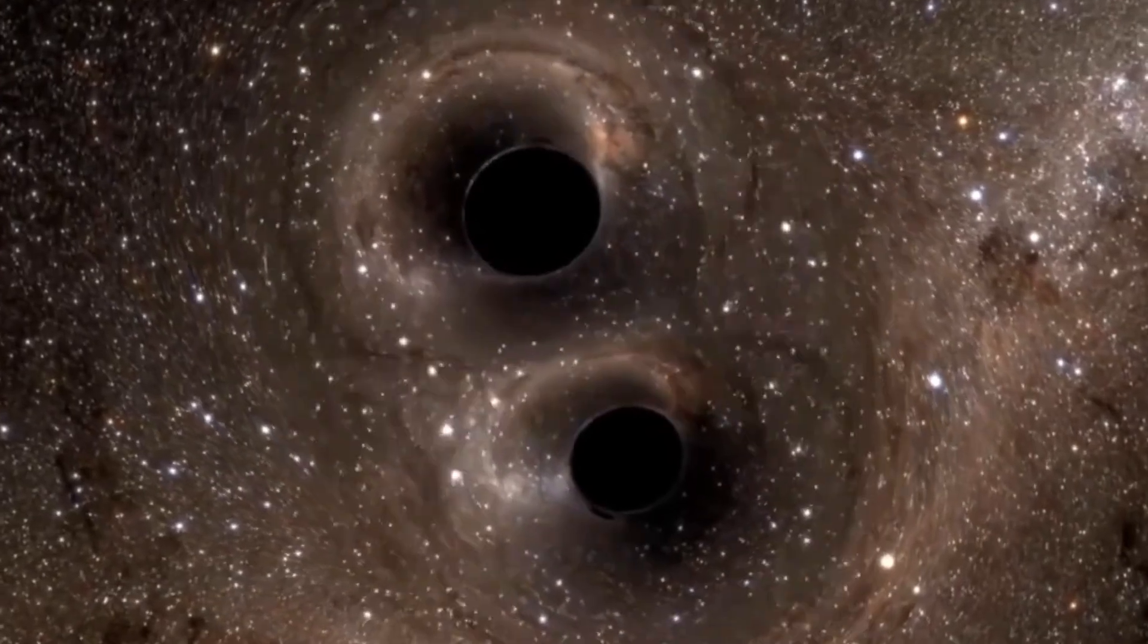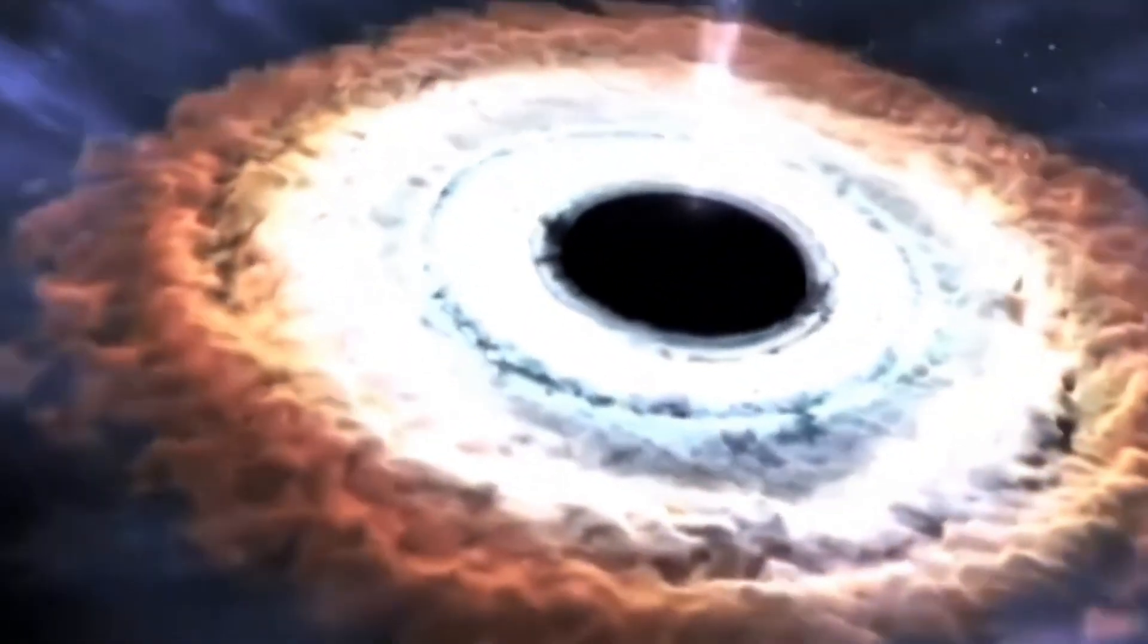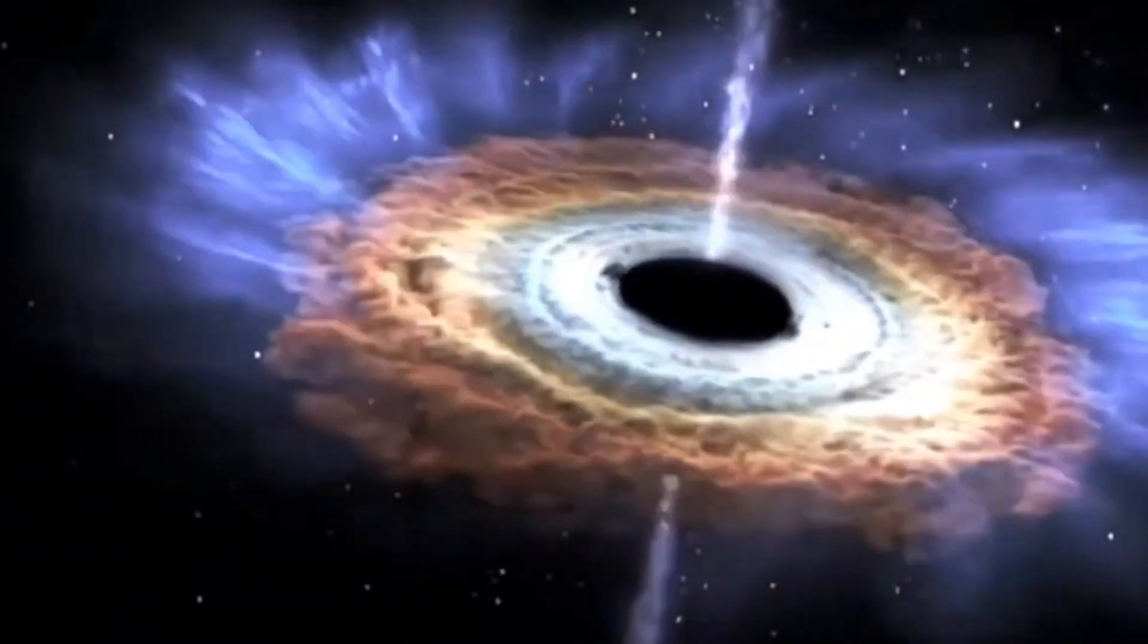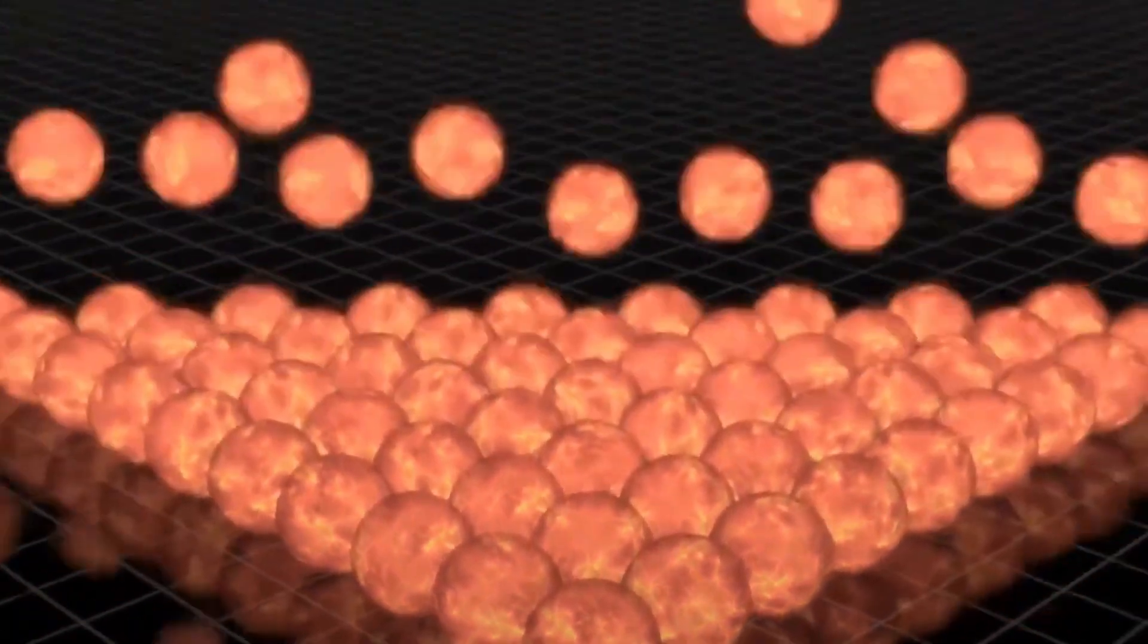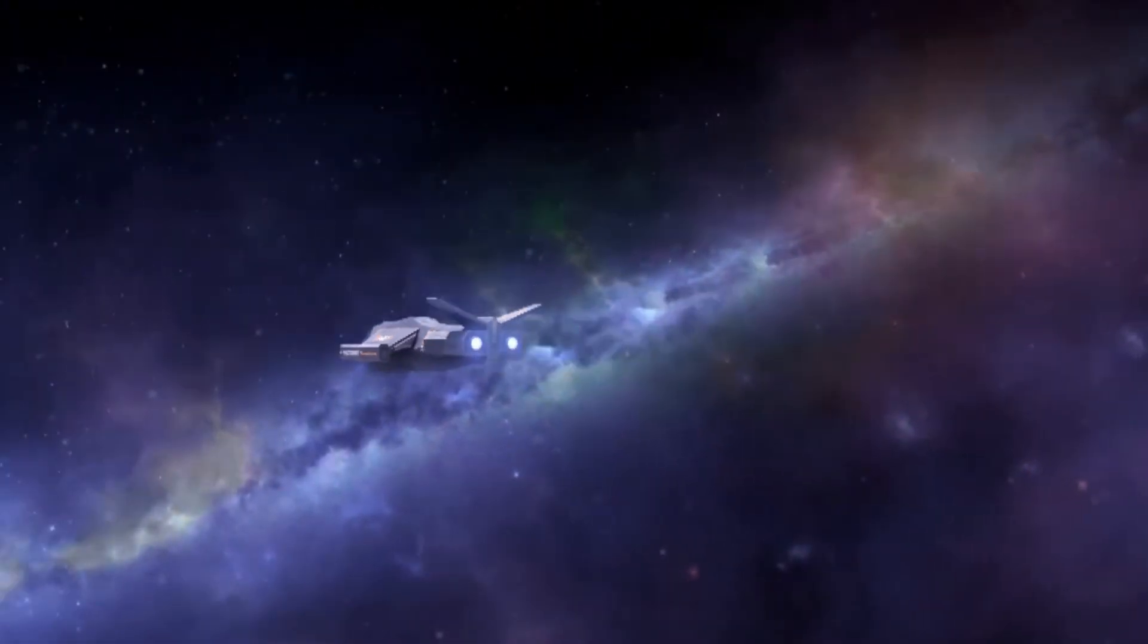But something strange is happening as our spacecraft gets closer. It came through the wormhole on a straight path, but now it's starting to curve. Why? Because the space around it is changing. And when space changes, time changes too.